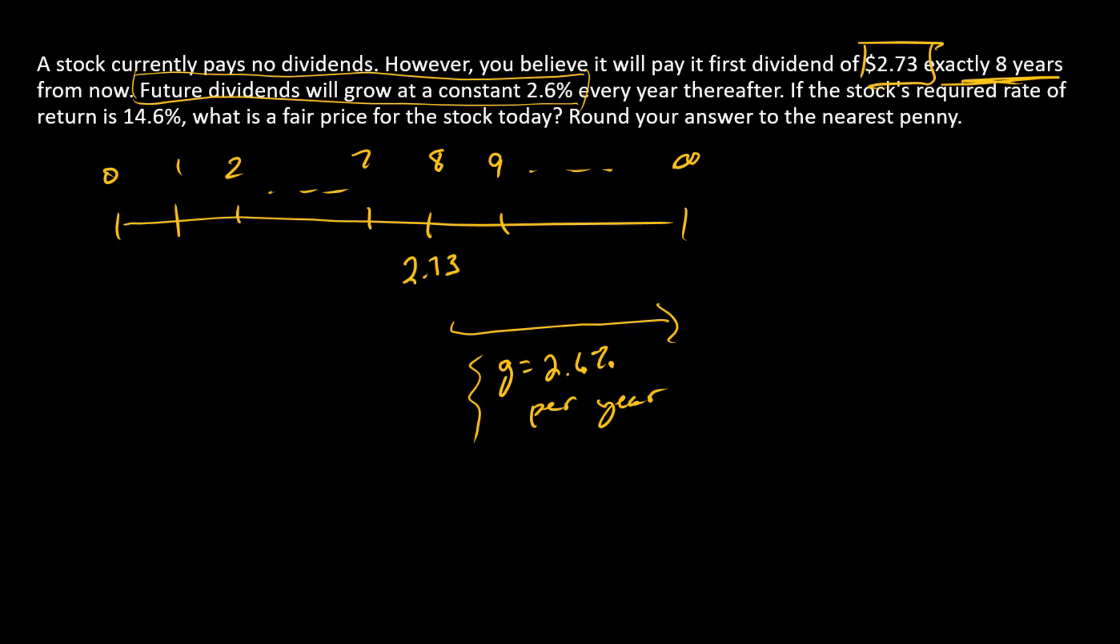We can immediately see that the Gordon Growth Model is going to apply, but we're going to make an adjustment. Recall that the Gordon Growth Model tells us the price of a stock is equal to the next dividend divided by the discount rate minus the growth rate.